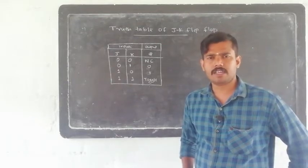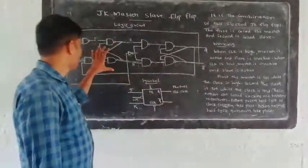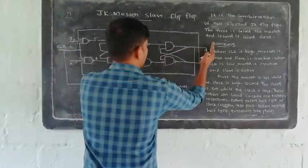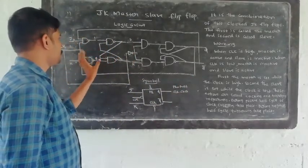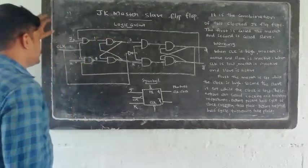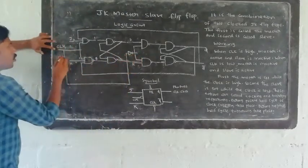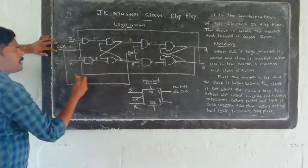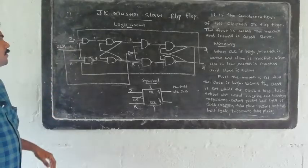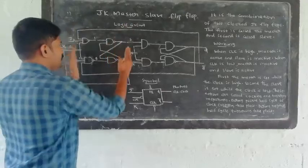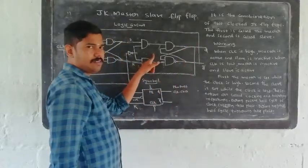In this class, we have studied the edge triggered JK flip-flop, and now this is the master-slave JK flip-flop — its logic circuit, working, and truth table. The master-slave JK flip-flop is a combination of two JK flip-flops. The first JK flip-flop is the master and the second JK flip-flop is the slave.